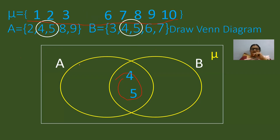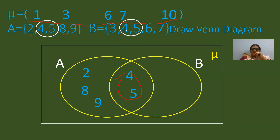Next we will fill the remaining elements in set A. 4 and 5 are already indicated in the intersection part. The elements left out in set A are 2, 8, and 9. These three elements will come and rest in the remaining place in set A. For set B, the intersection elements 4 and 5 are already shown, and the remaining elements left out are 3, 6, and 7. These three elements will come and rest in the remaining part of set B.